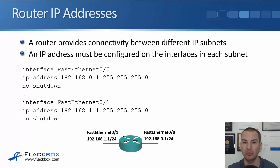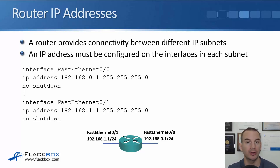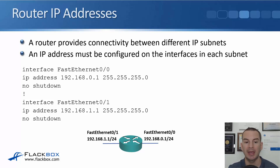On our routers, interfaces are shut down by default. So remember to also put in the no shutdown command to bring the interface up. We do that for interface FastEthernet0/0, and then we also need to configure interface FastEthernet0/1. It gets IP address 192.168.1.1, subnet mask 255.255.255.0, no shutdown.